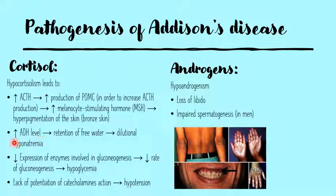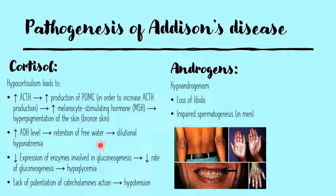Low cortisol also increases the level of antidiuretic hormone, or ADH, which leads to reabsorption of water in the collecting tubules, collecting ducts, and distal convoluted tubules. We already had hyponatremia because of low aldosterone, but now we also have excessive water being reabsorbed. This leads to a dilutional or hypotonic hyponatremia.